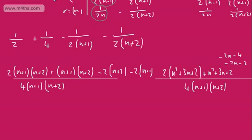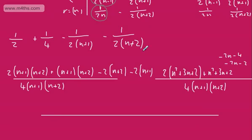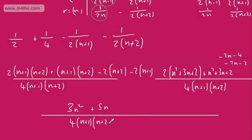Simplifying: 2n² + n² gives 3n², 6n + 3n gives 9n, then minus 4n gives 5n, and the constants cancel out. So we're left with 3n² + 5n over 4(n+1)(n+2), which we can tidy up and write as n(3n+5) over 4(n+1)(n+2).